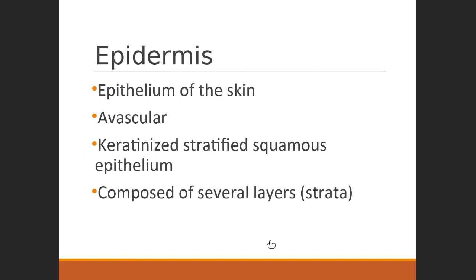The epidermis is composed of keratinized stratified squamous epithelia — a specialized structure that gives a bit more integrity and strength to the epidermal tissue. It is composed of several layers, and the number of layers will vary from one place to another in the body.